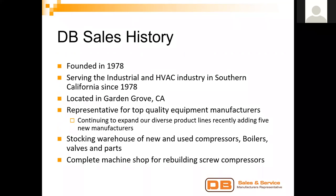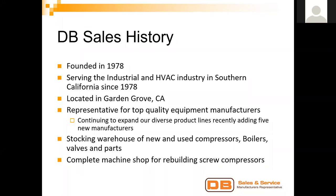DB Sales was founded in 1978 by Dean Grain, who ran the company up until 2010 when I came in as part of a long-term transition and acquired the company. We've been running it under this management group since 2010 and continuing to grow exponentially most years. We continue serving the industrial HVAC community since 1978. Our corporate headquarters is located in Garden Grove, California, with representatives throughout Southern California. We continually add new manufacturers and have a stocking warehouse of boilers, valves, parts, and more.